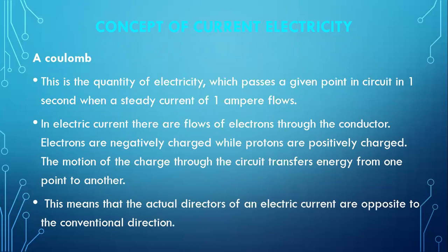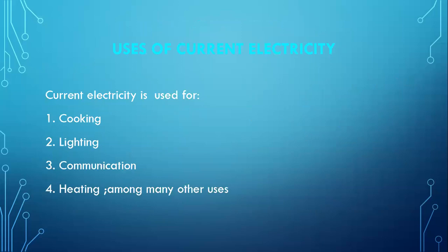The motion of the charge through the circuit transfers energy from one point to another. This means that the actual direction of an electric current is opposite to the conventional direction.